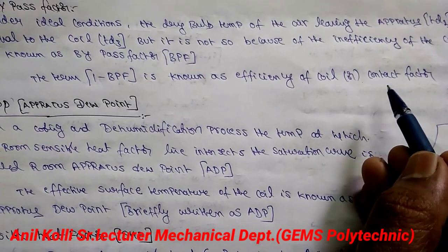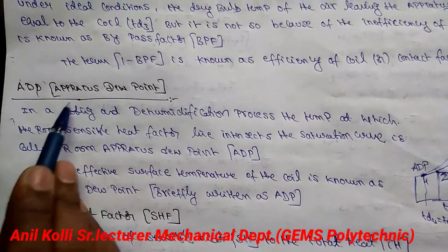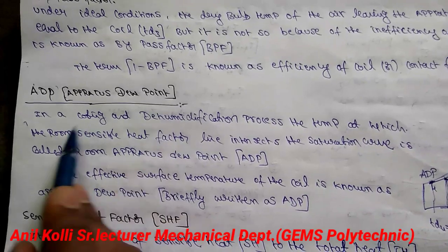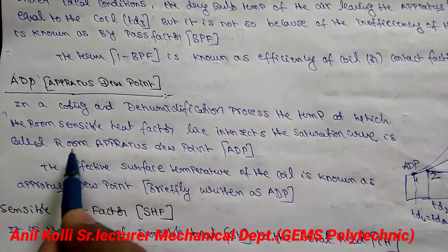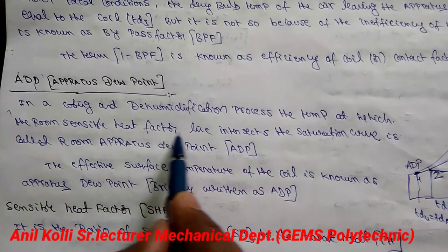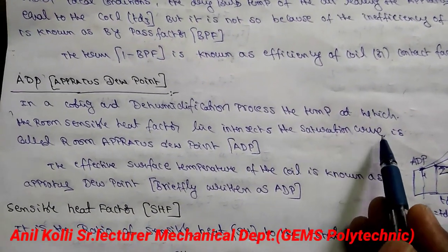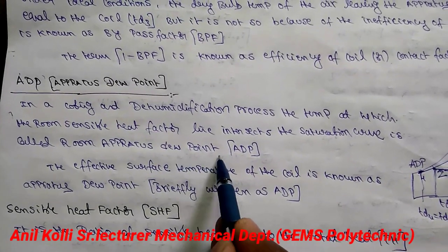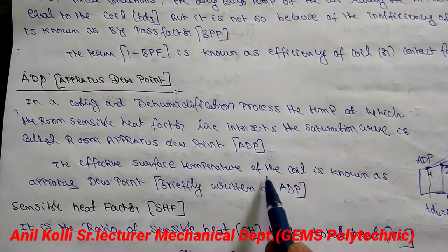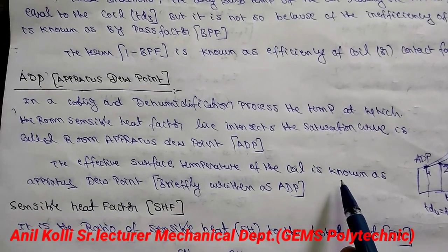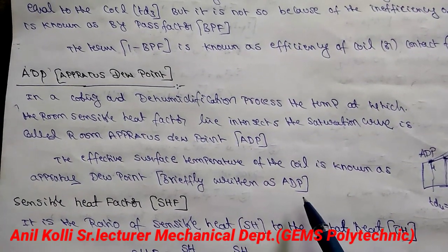Next, we go for ADP — what is apparatus dew point. In a cooling and dehumidification process, the temperature at which the room sensible heat factor line intersects the saturation curve is called the apparatus dew point. Another definition: the effective surface temperature of the coil is known as apparatus dew point, briefly written as ADP.